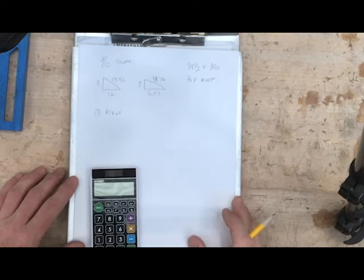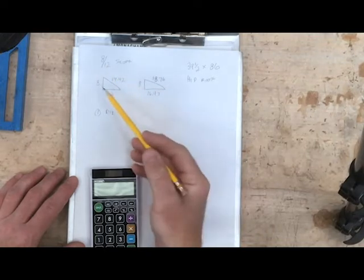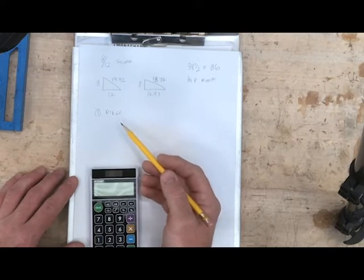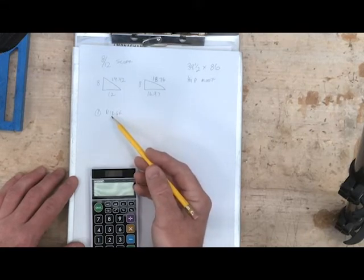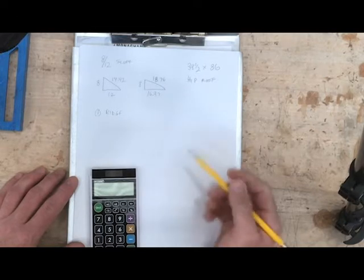This is going to be the first of a series of videos where we're going to construct a hip roof. Our example here is a 12-12 pitch. We'll break these videos down into different parts. First we'll start with the ridge, then we'll do the commons, and then we'll do hips and jacks.